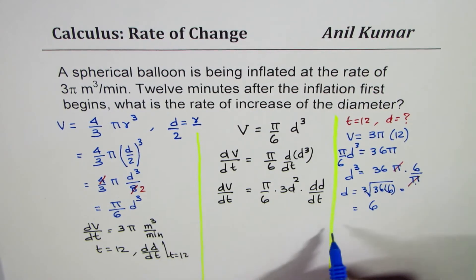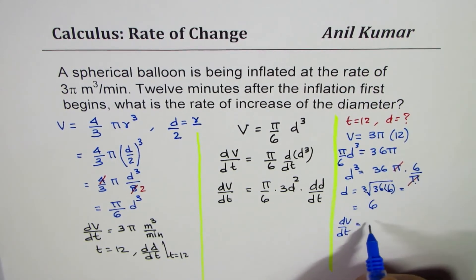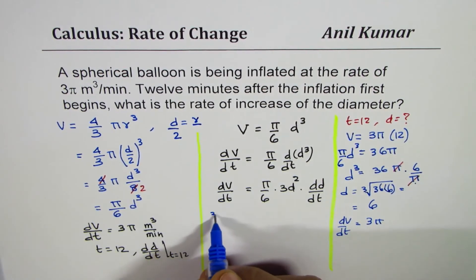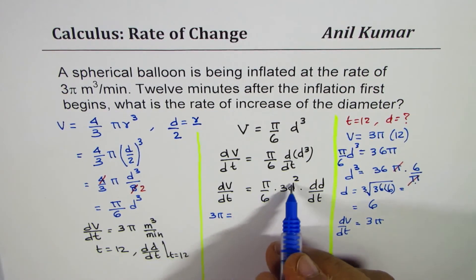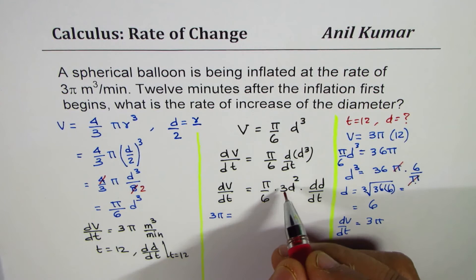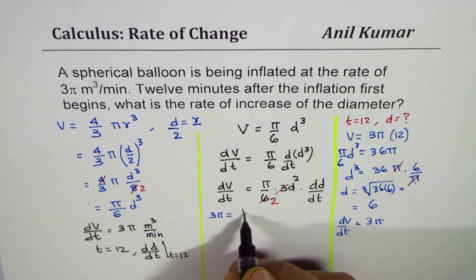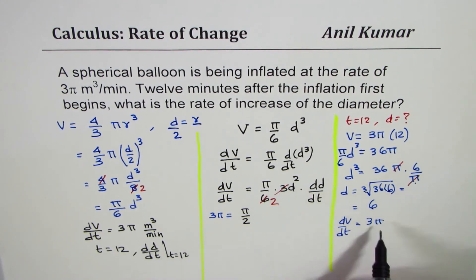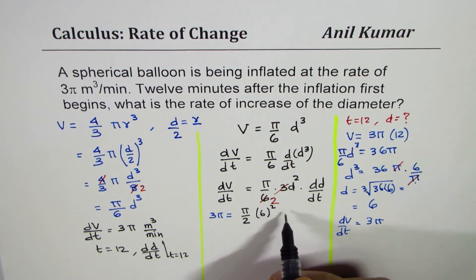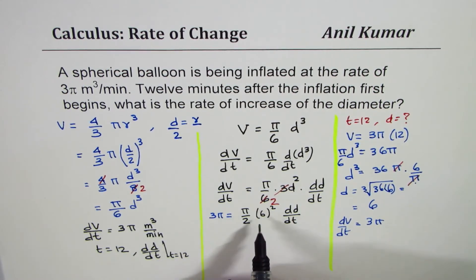I think we know everything here. dV/dt is given to us: dV/dt is 3π. Substitute these values. Let's simplify this. We'll write this as π/2 d². d is 6, so we'll write 6² times dd/dt, which we need to figure out. Now we can write this as 3π times 2 over π, and this 6 also comes in the denominator as 6².